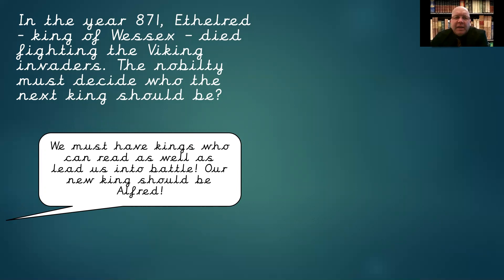So you can see the argument: whilst it's important to have a king who can lead into battle, you're not going to spend your entire time at battle. Kings need to be multi-talented. In this case, they need an intelligent, learned king who can read, who is well-educated, who can deal with lots of situations apart from just the battlefield. So he was putting forward a really strong case for Alfred to take on the throne. Despite being not the greatest of warriors, he had a lot of other skills and things he could bring to the crown.